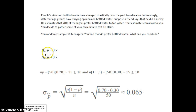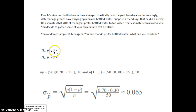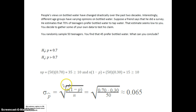We always assume the null hypothesis is true, so we assume p equals 0.70. Check for normality: n times p equals 50 times 0.70, which is 35 — greater than or equal to 10. And n times (1 minus p) is also greater than or equal to 10. Next, we need the true standard error. Since we're assuming the null hypothesis is true, p is 0.70, giving a standard error of 0.065. The z-value is p-hat minus p over the standard error: p-hat is 45/50, which is 0.90, minus 0.70, divided by 0.065. The z-value is 3.077.